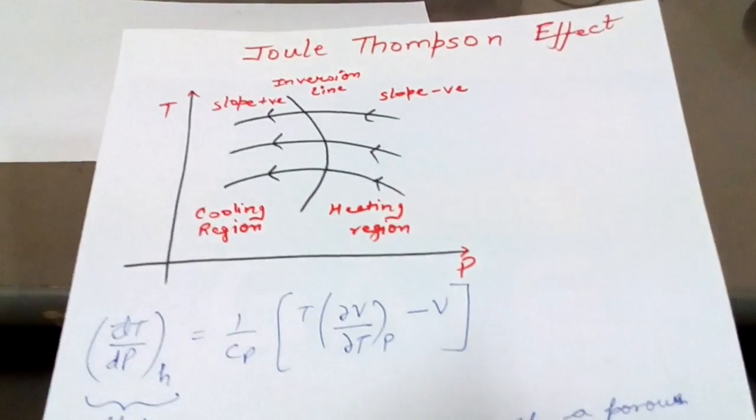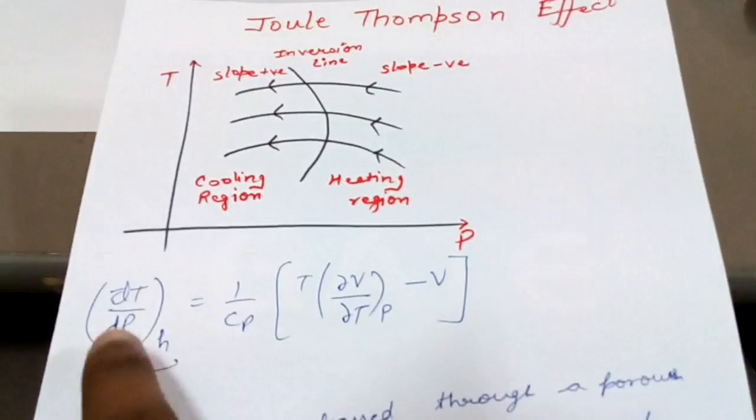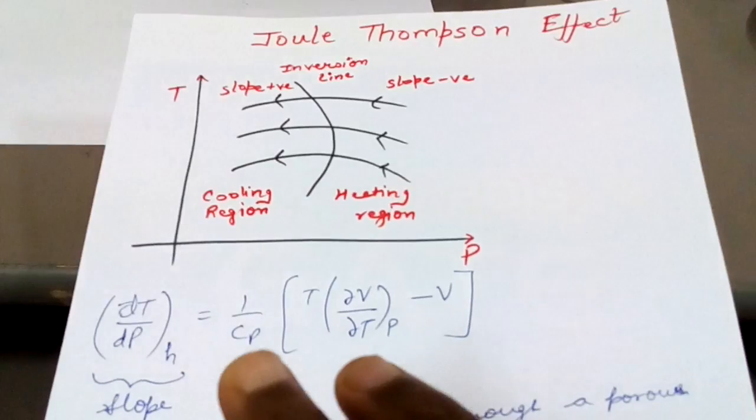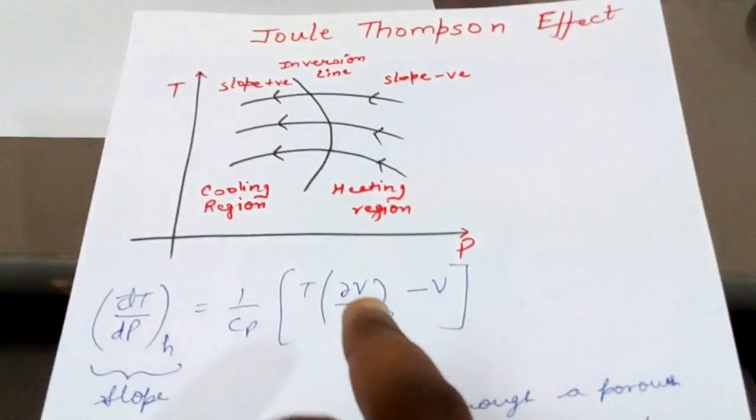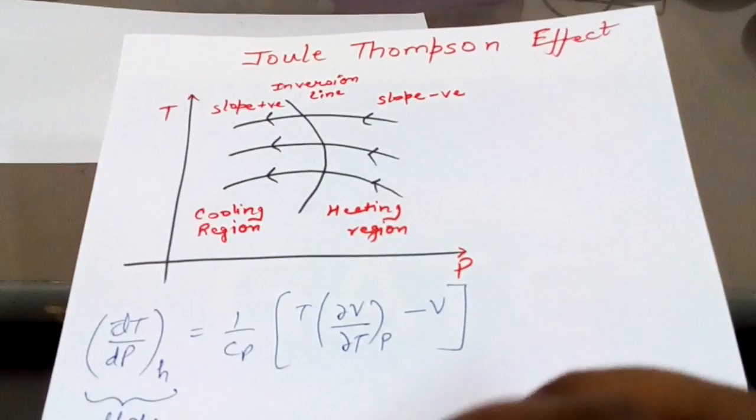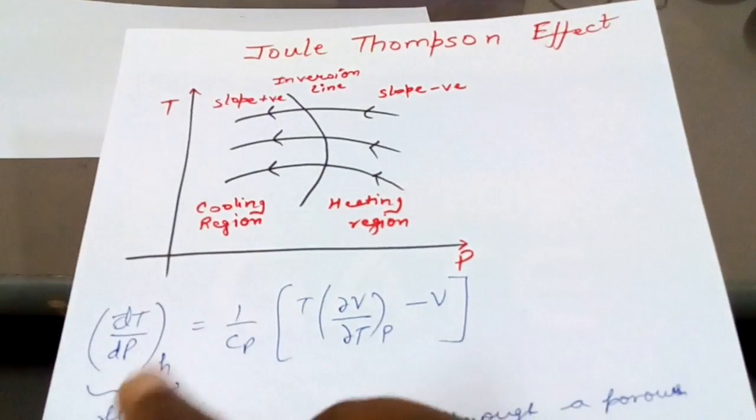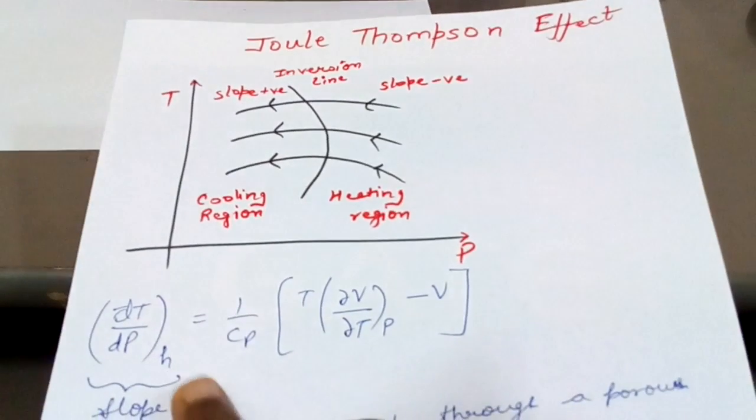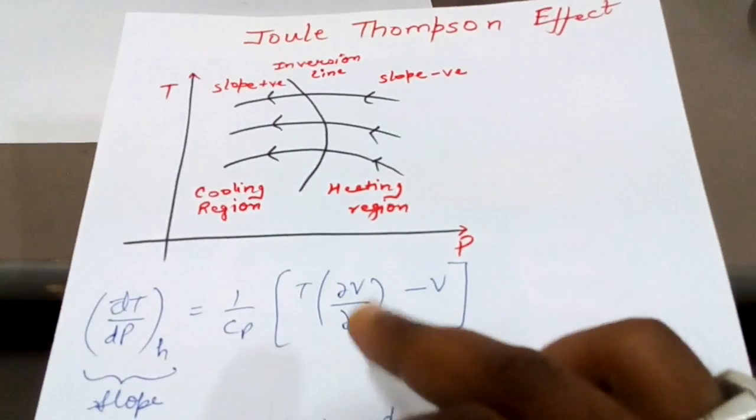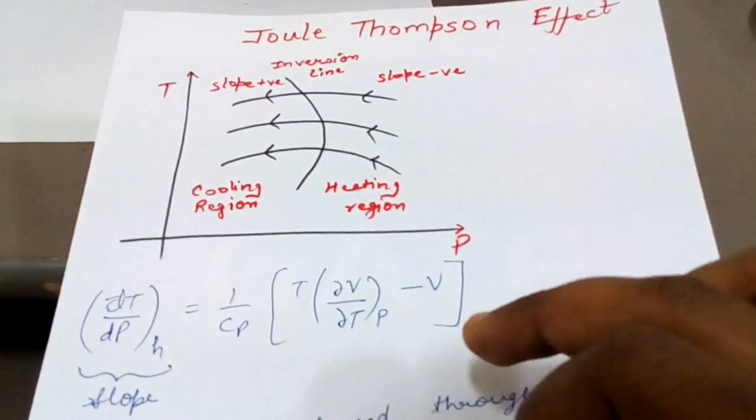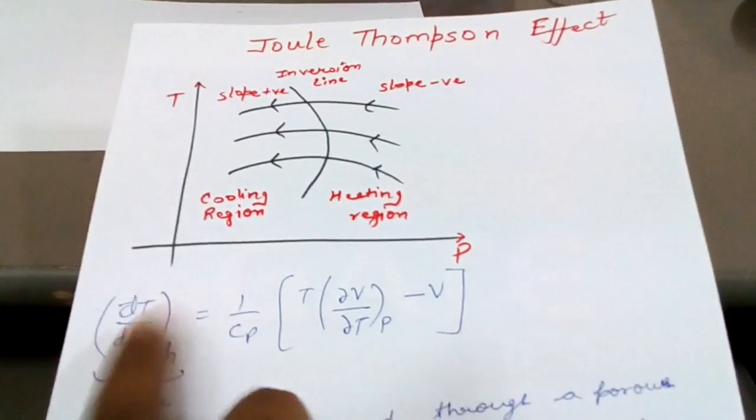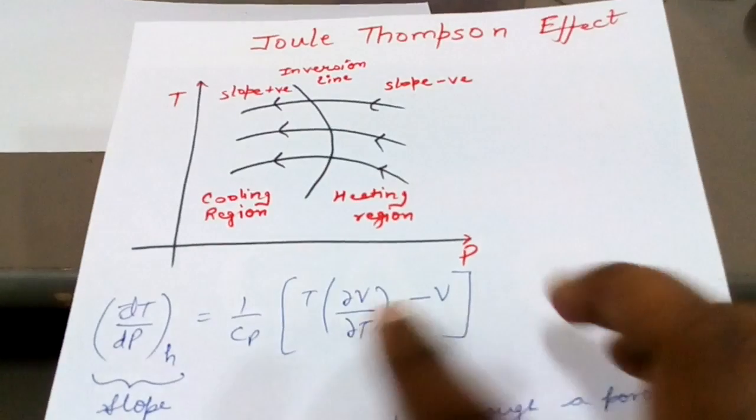This term is called mu. So Joule-Thompson coefficient or the slope of this T-P diagram represents the Joule-Thompson coefficient, which is given by dT by dP at constant enthalpy, or which is equal to 1 upon Cp, T del V by del T at P minus V. So either you write this or you write this or you denote it by mu, all are equal.